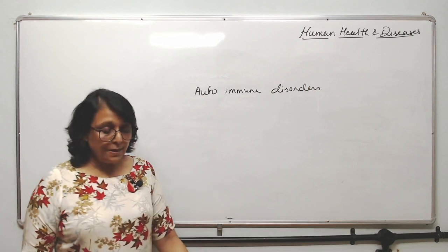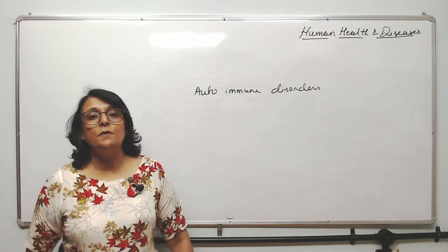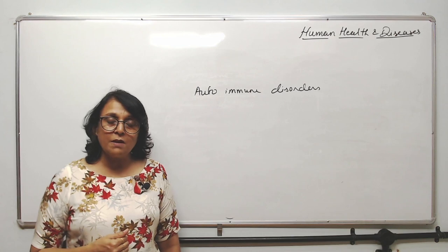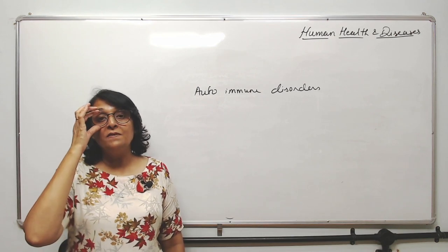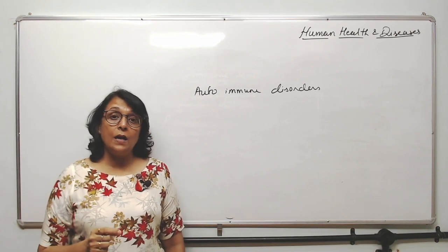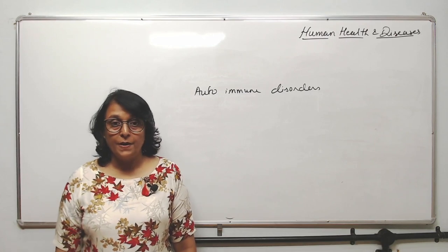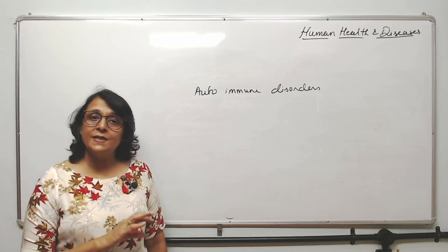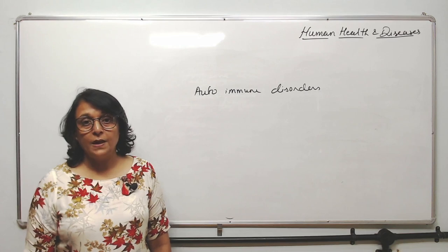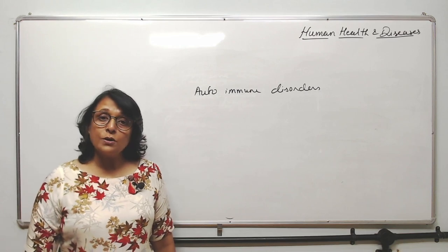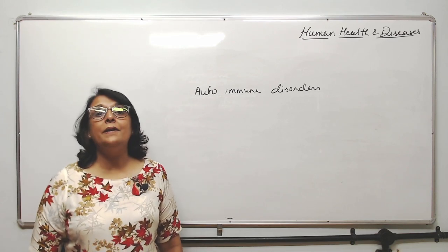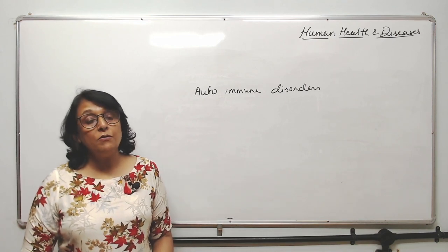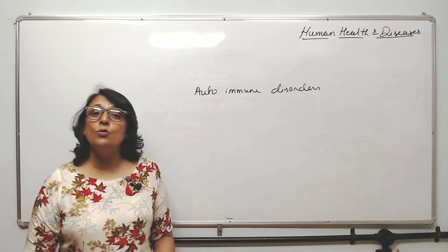Our immune system can distinguish between self and non-self — the glycoproteins which are our own versus the glycoproteins which are not our own. Suppose our own cells become antigenic and behave like antigens — then our immune system is going to attack them.